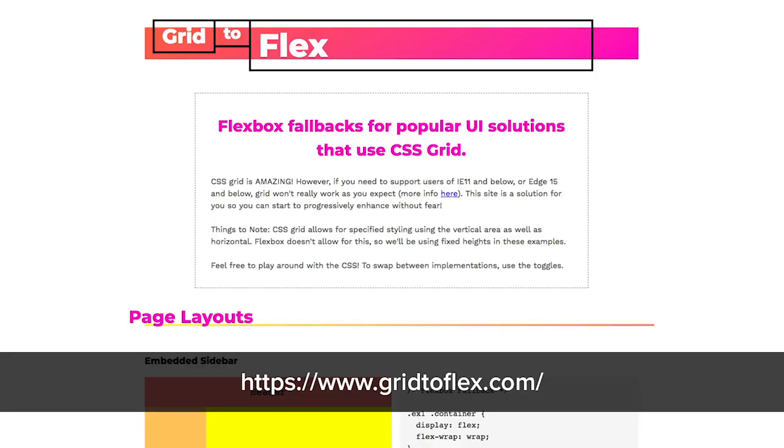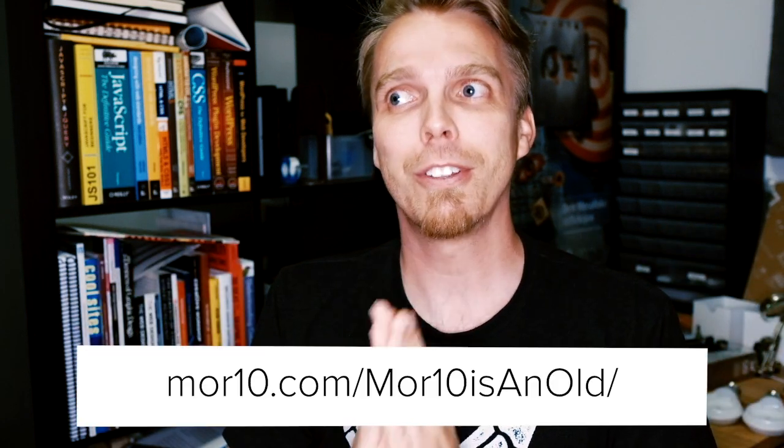The third resource is Una Krevets' website called Grid to Flex, which shows you how to create a layout using grid and then how to create the same layout using flexbox so you can fall back to flex. That doesn't solve the problem if your browser supports neither grid nor flex, but once you have a flex-based layout it's relatively easy to make that work using floats as well. So you end up with a three-stage fallback process that gives you the same overall layout across all browsers.